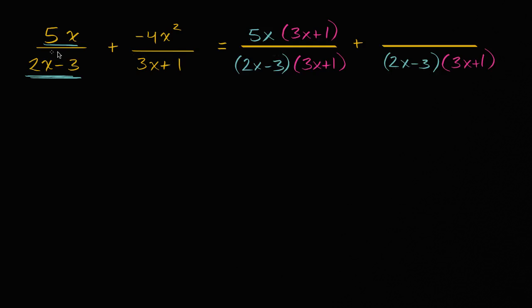So let's do the same thing over here. Over here I have a denominator of 3x plus one. I multiplied it by 2x minus three. So I would take my numerator, which is negative 4x squared, and I would also multiply it by 2x minus three.